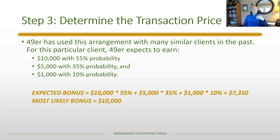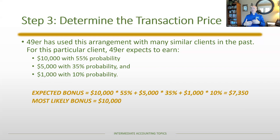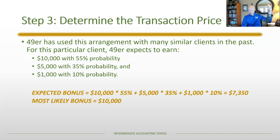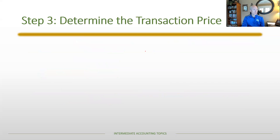The other acceptable method is the most likely amount, which would be $10,000. The downside is that over time you'll systematically overrecognize the bonus, initially overstating revenue. The upside is that 55% of the time there's no reconciliation needed. There are pluses and minuses to each approach. On a test, if two probabilities are equal you'd use the expected value; if one outcome is around 80% probable, you'd use the most likely amount.